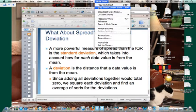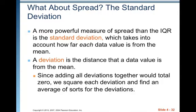Welcome back. So what about spread — the standard deviation? A more powerful measure of spread than the IQR is the standard deviation, which takes into account how far each data value is from the mean. A deviation is the distance that a data value is from the mean — how far it deviates from the mean. Since adding all deviations together would total zero every single time, we square each deviation and find an average of sorts for the deviations.